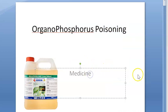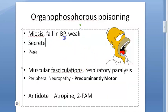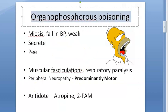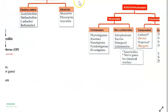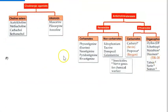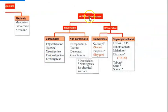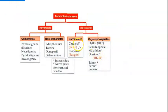Let us look at organophosphorus poisoning, a topic under medicine. Pharmacologically, organophosphorus compounds are cholinergic drugs. In cholinergic drugs you have cholinergic agonists like acetylcholine and pilocarpine, and anticholinesterases like physostigmine. These are reversible, and then irreversible anticholinesterases include carbamates and organophosphates.